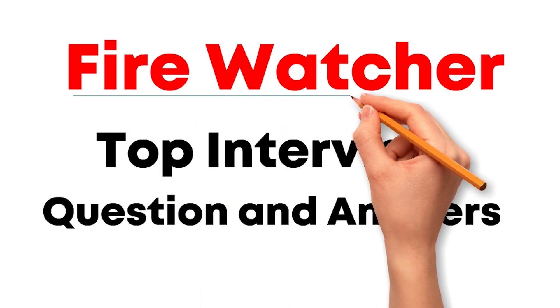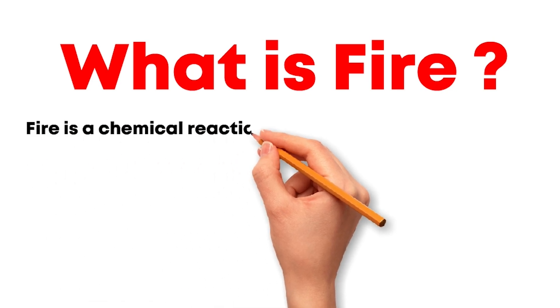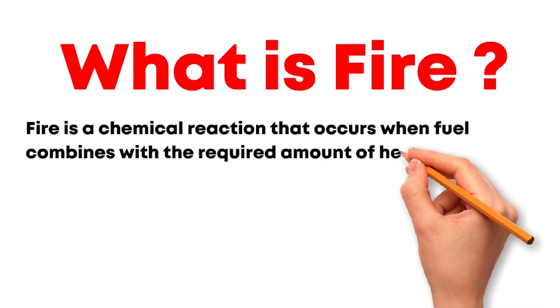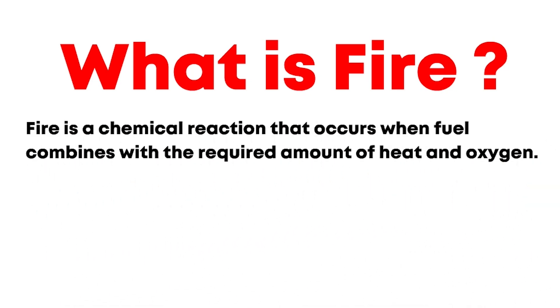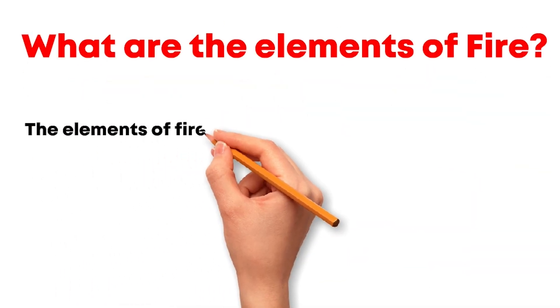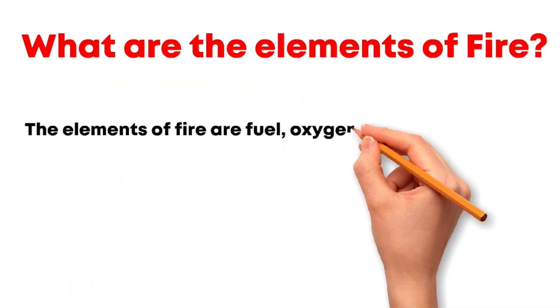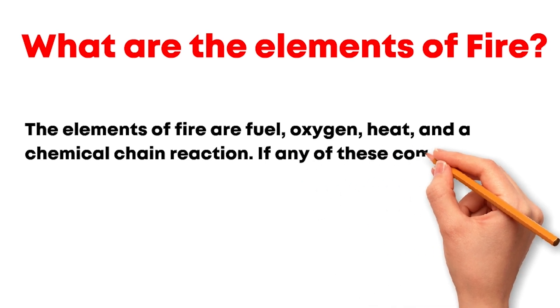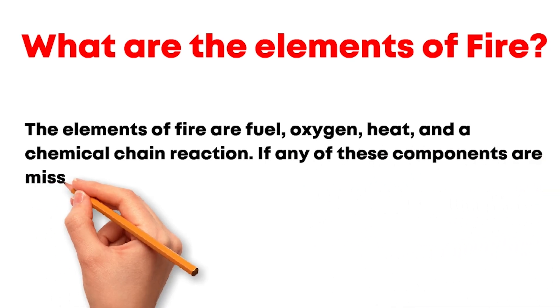Let's start with the basics: what is fire? Fire is a chemical reaction that occurs when fuel combines with the required amount of heat and oxygen, producing heat and light. The elements of fire are fuel, oxygen, heat, and a chemical chain reaction. If any of these components are missing, a fire cannot occur.